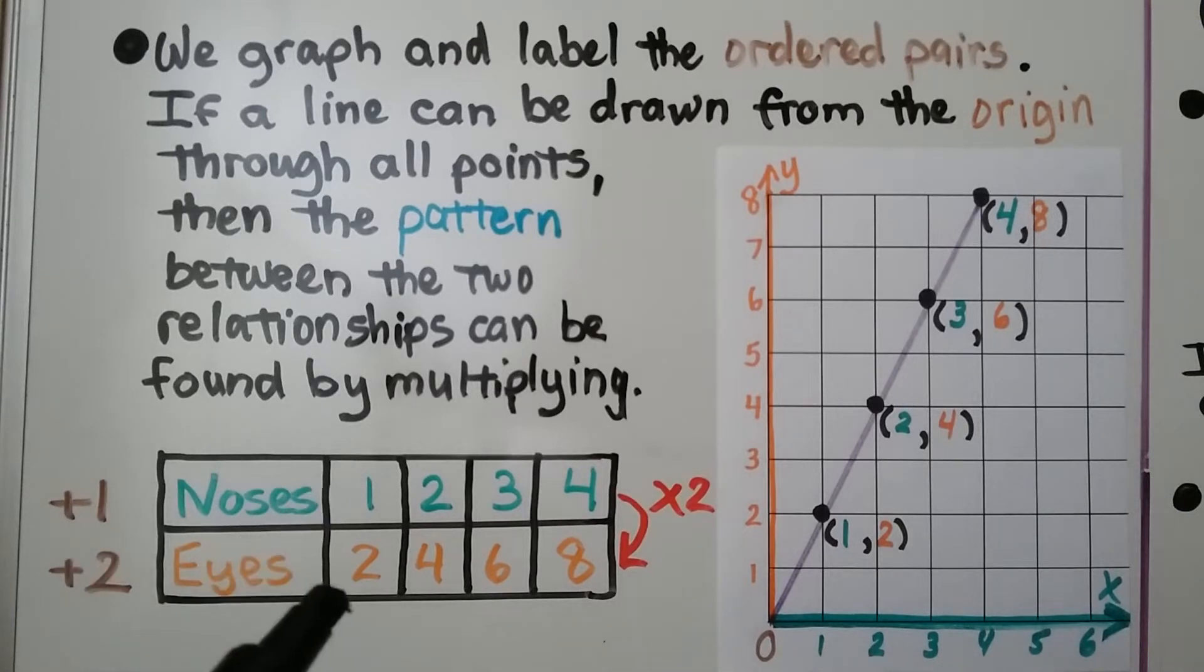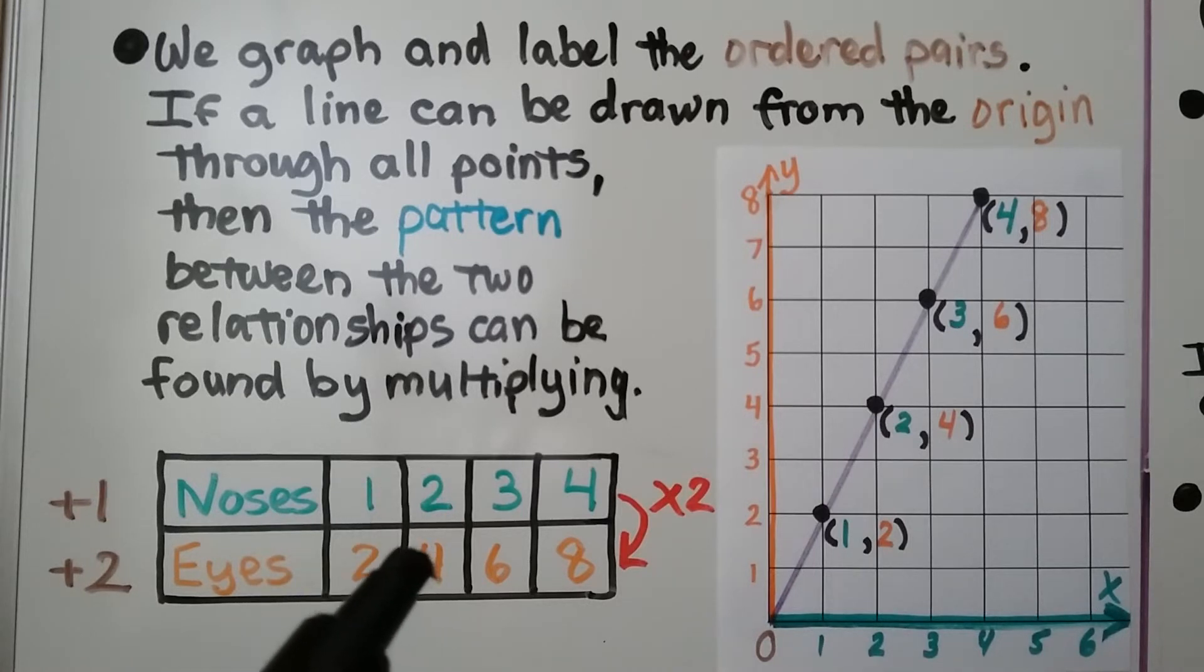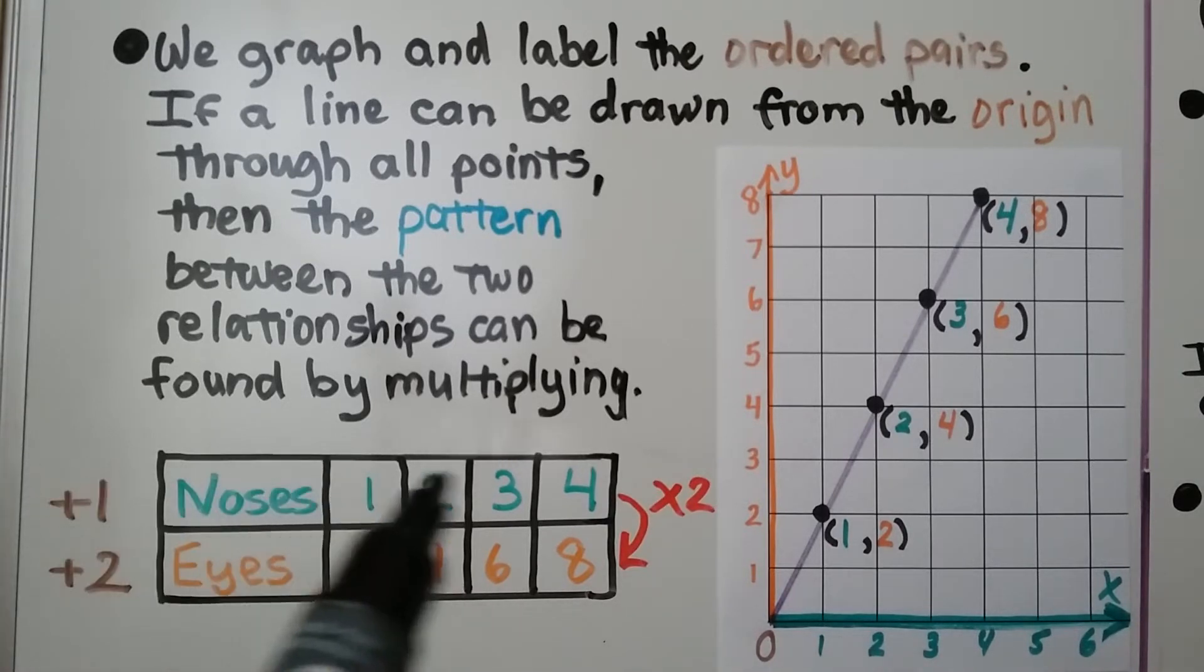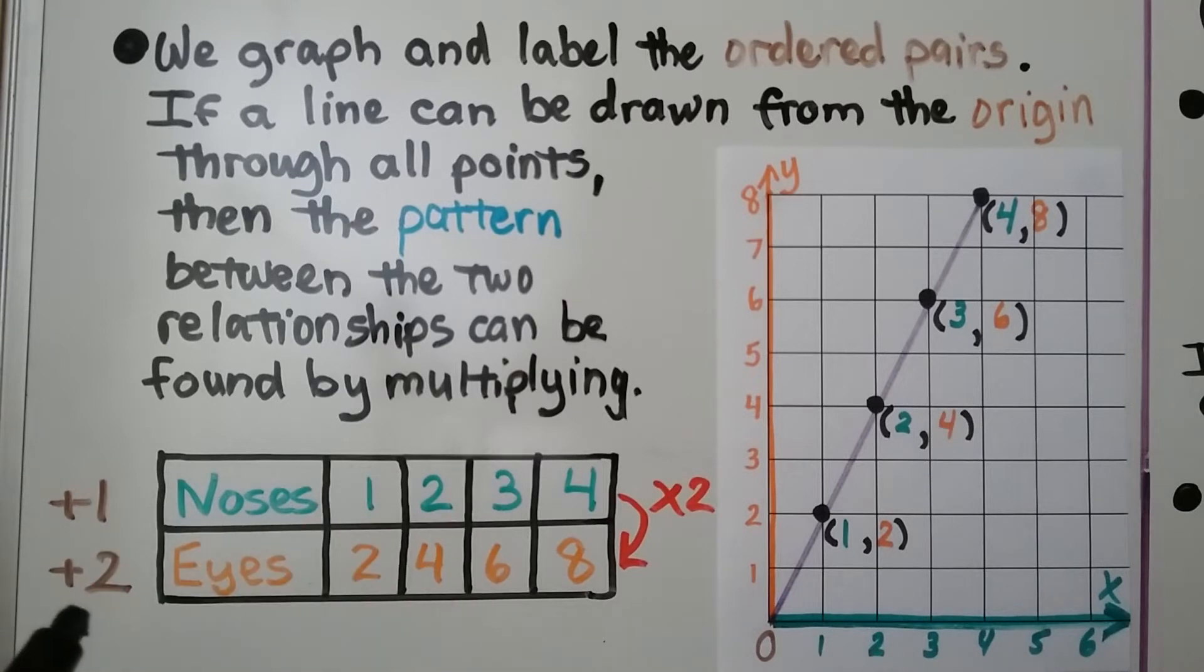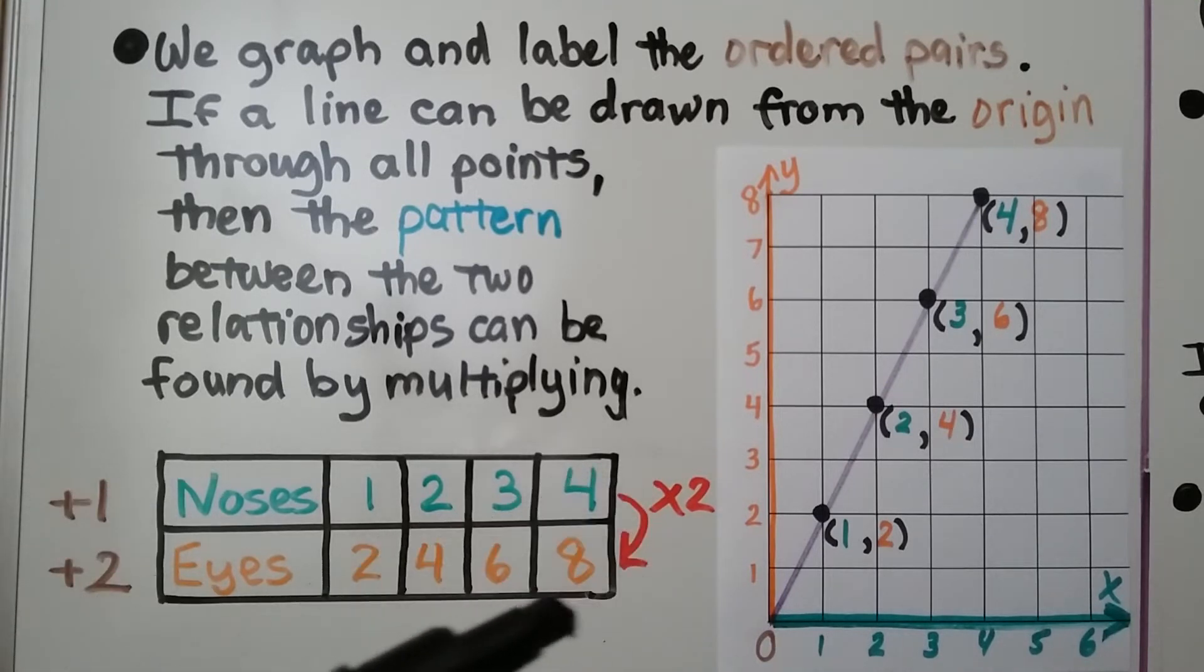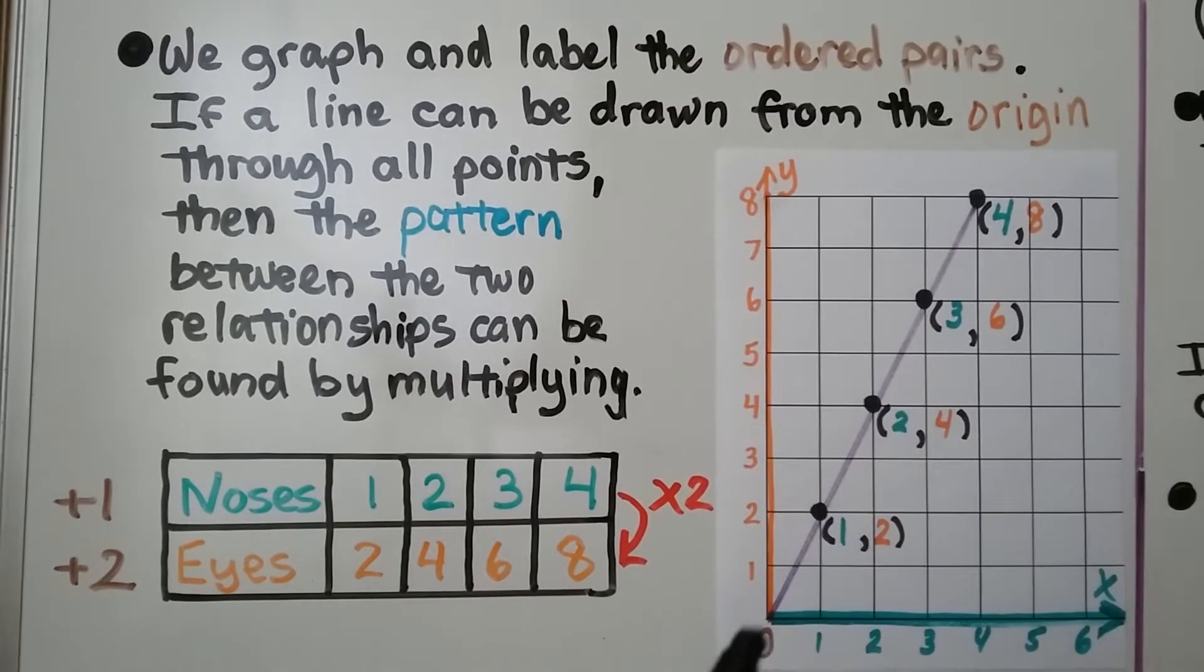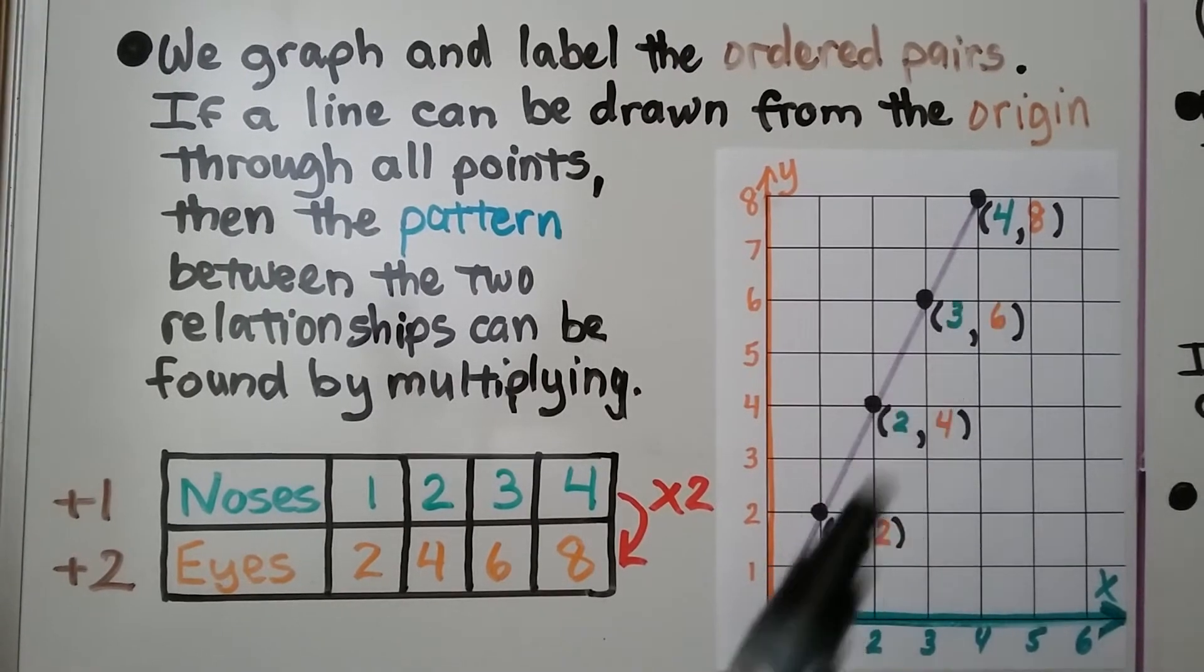For noses, you have one nose, you have two eyes. If there's two noses, there'll be four eyes. Three noses, that means there's six eyes. The rule for noses is to add one for the sequence. The rule for eyes is to add two for the sequence. And the rule that relates noses to eyes is we multiply by two. When we draw a line from our graphed points, we can see the pattern is multiplied by two.